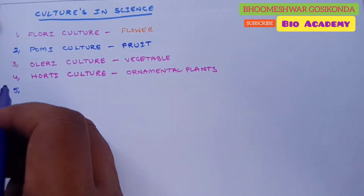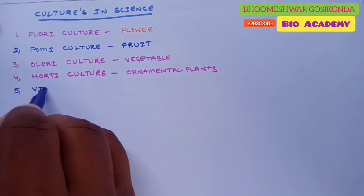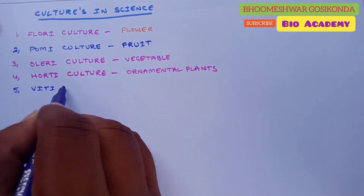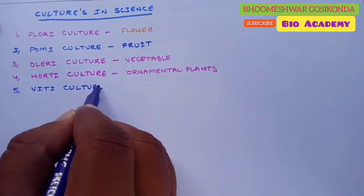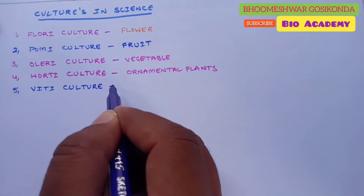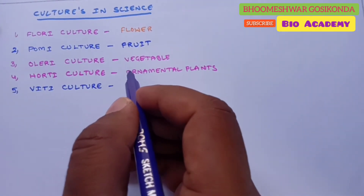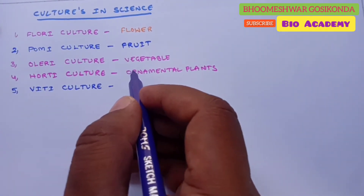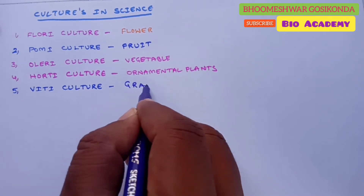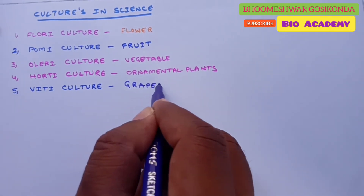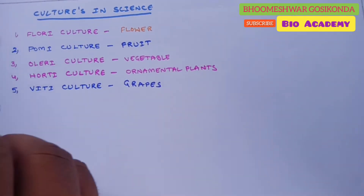The next one is viticulture. Viticulture is also called wine growing. It is the cultivation and harvesting of grapes, and it is also one branch of the science of horticulture.